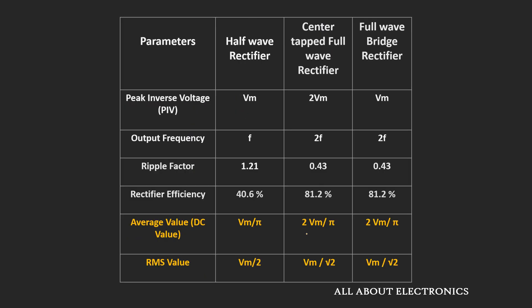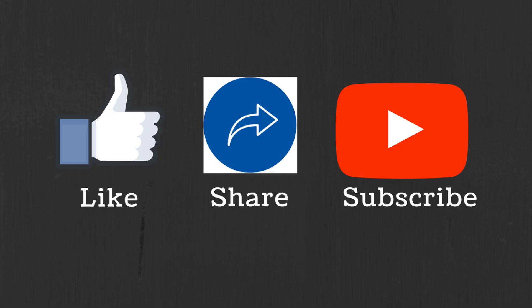So I hope in this video you understood how to find the RMS as well as the average value for the half-wave as well as the full-wave rectifier. In the next couple of videos, we will also see how to find the ripple factor as well as the ripple voltage for the half-wave and full-wave rectifier circuit. If you have any question or suggestion, do let me know in the comment section below. If you like this video, hit the like button and subscribe to the channel for more such videos.